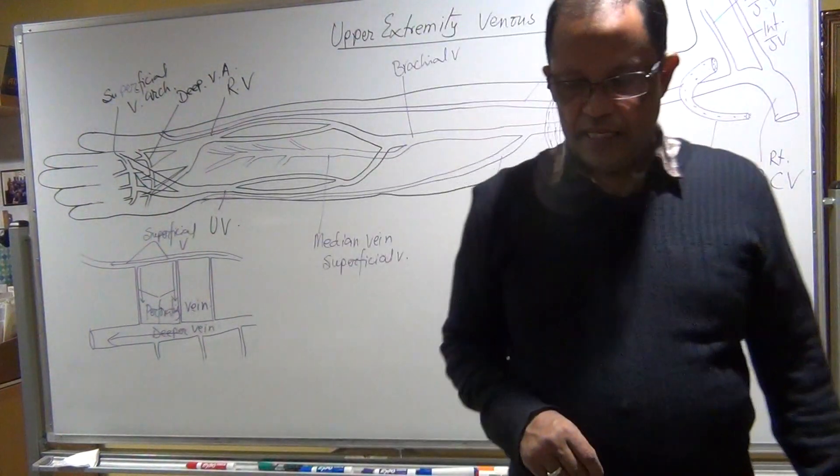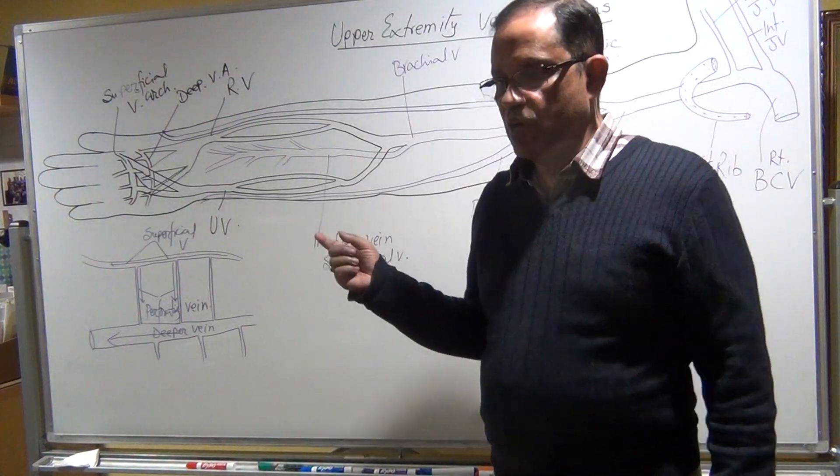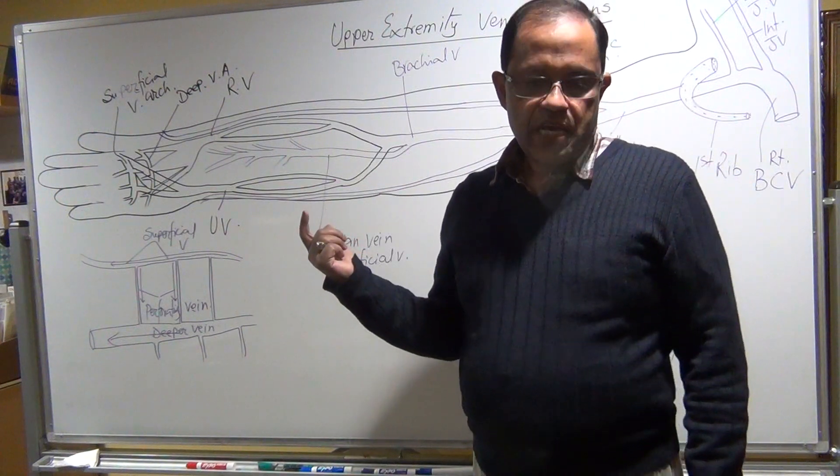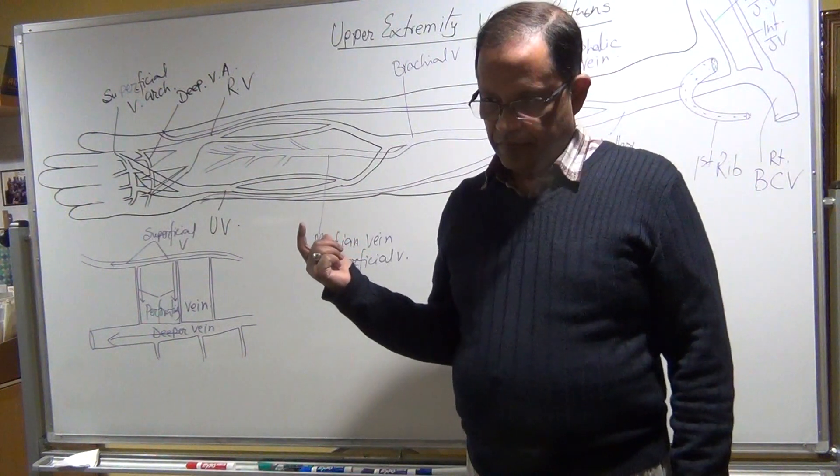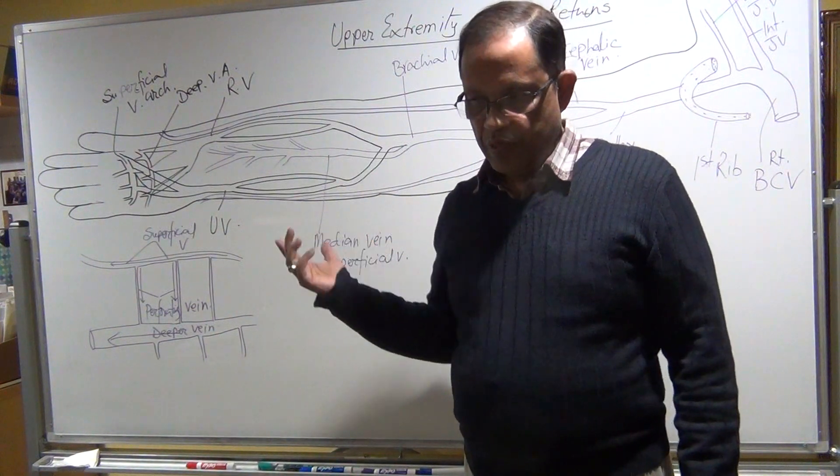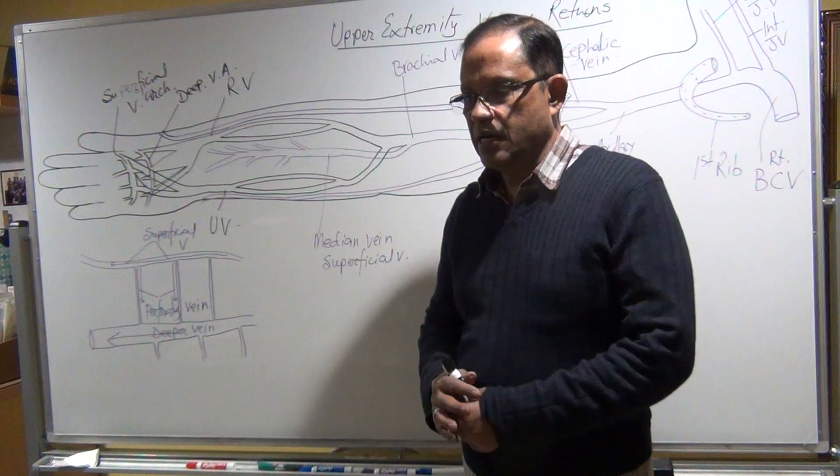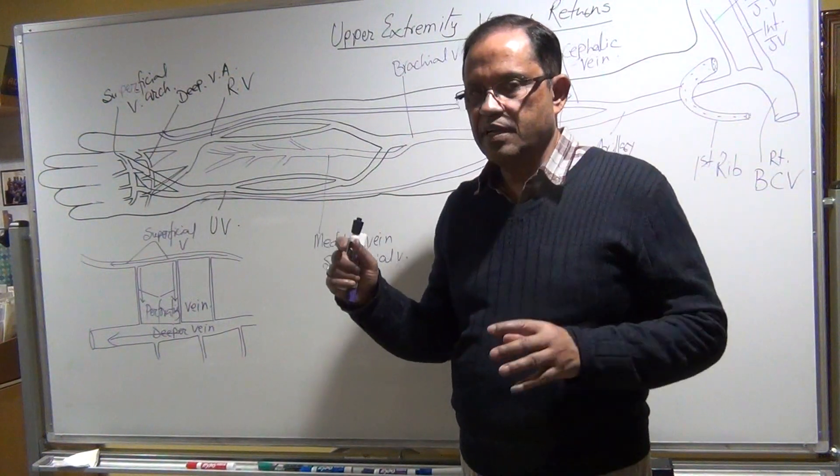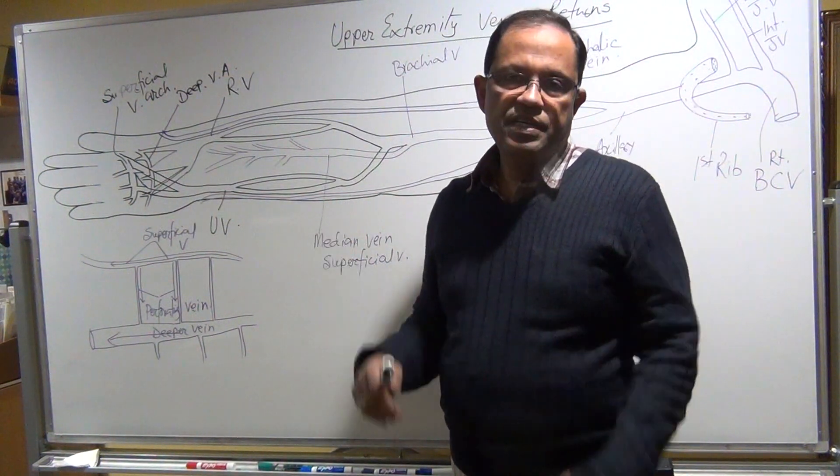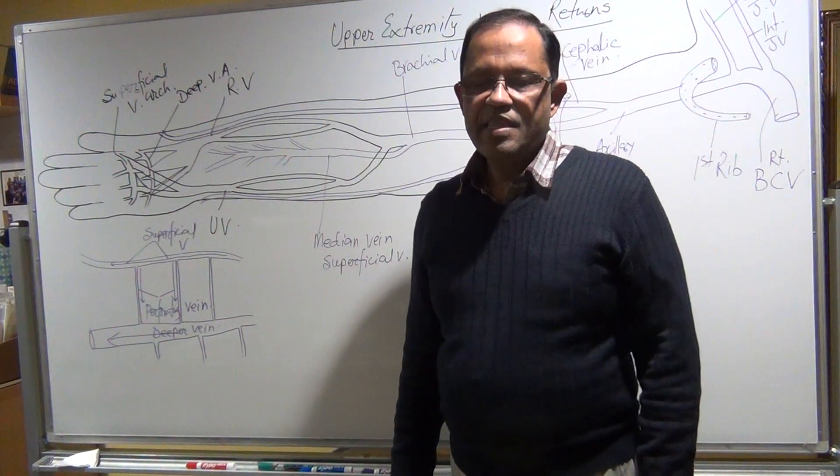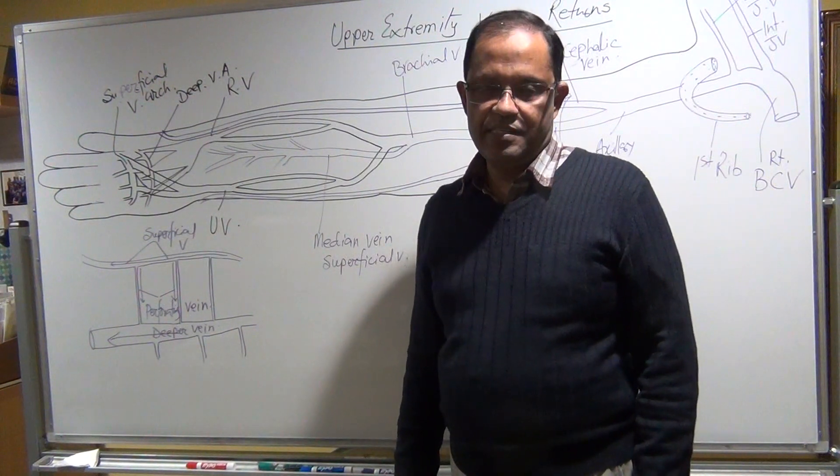Next time we'll discuss a couple of disease conditions of the venous system in the upper extremity, and then we will move forward with some specific points of discussion about the upper extremity vasculature. Thank you very much for your attention.